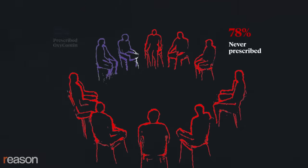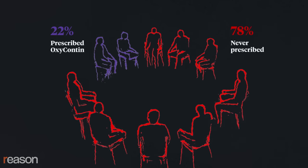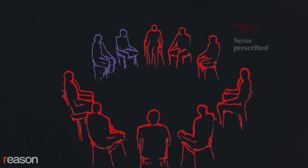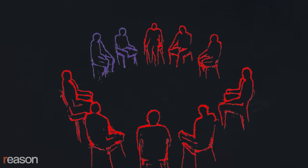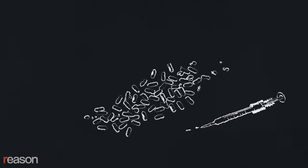A survey of OxyContin-addicted people entering rehab from 2001 to 2004 found that 78% had never been prescribed the medication. And among the 22% who had been prescribed OxyContin, nearly all had substance abuse problems before taking the drug. So if they weren't taking OxyContin, they likely would have been taking something else.